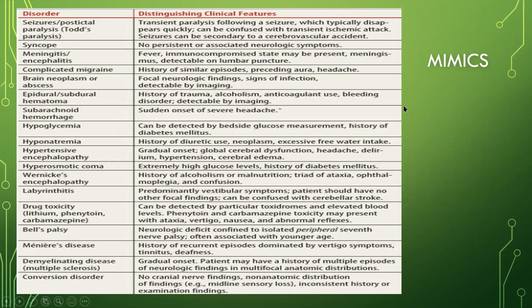These are all the mimics. Seizures very commonly can mimic a CVA, especially post-ictally — what's called Todd's paralysis. Patients post-seizure may have all the symptoms of a CVA, so allow the postictal period to pass and then see if the symptoms persist. Syncope can mimic a seizure when the patient is revived. Meningitis and encephalitis, depending on where the patient has the majority of swelling, and complicated migraines can make you think this is possibly a CVA or subarachnoid rather than just a migraine.